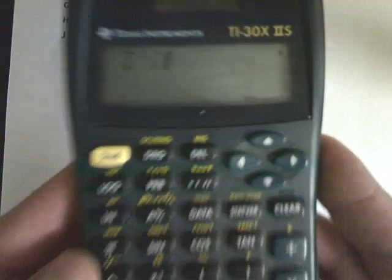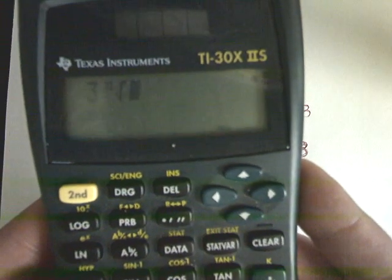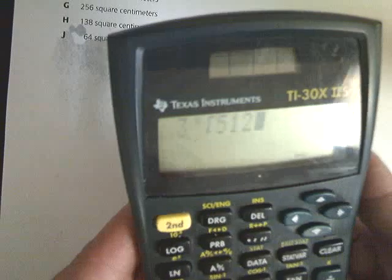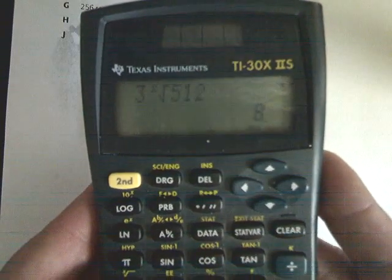And you get that little X to the root thing, so it shows you that it's whatever root you just pressed in. And then you type in 512, hit enter, and it gives you 8.